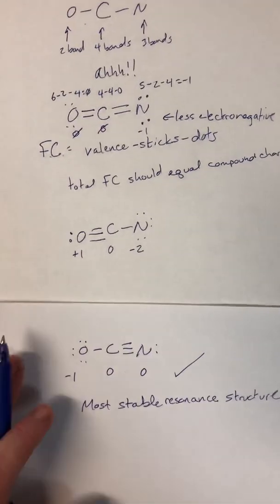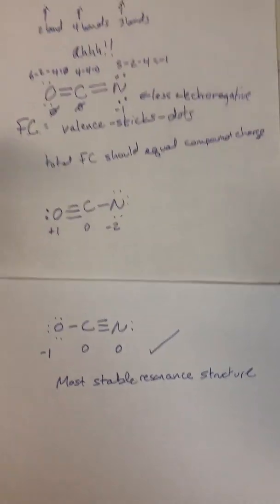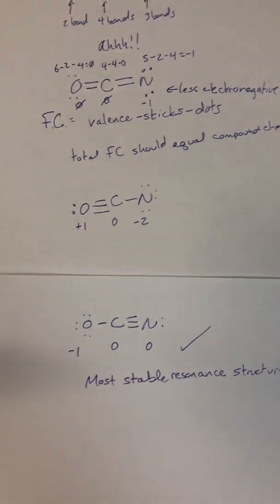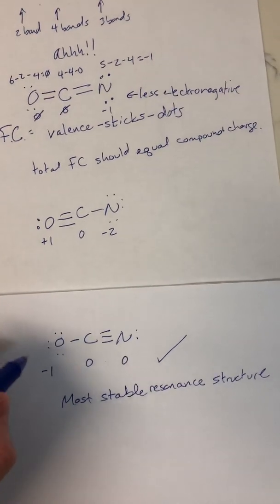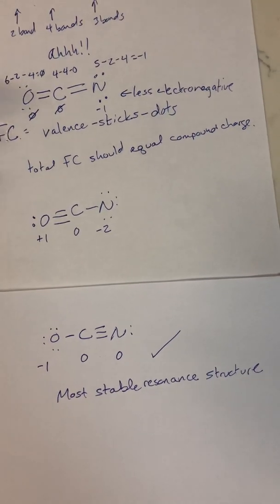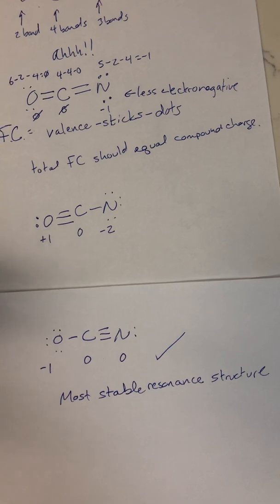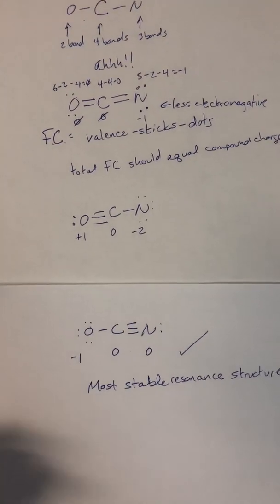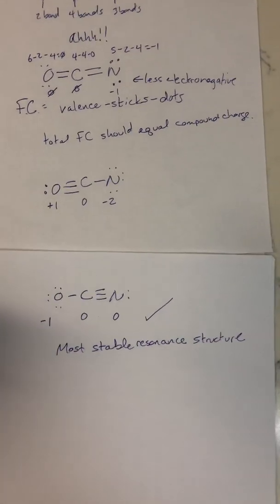When we look at the difference between the NCO⁻ structures — this one, this one, and this one — we can see they're resonance structures. They're all technically possible, but one is the most stable. When you're looking at different answers and get one or two different variations of the same compound, make sure you go through and look at the formal charges and determine which one is actually the most stable one.